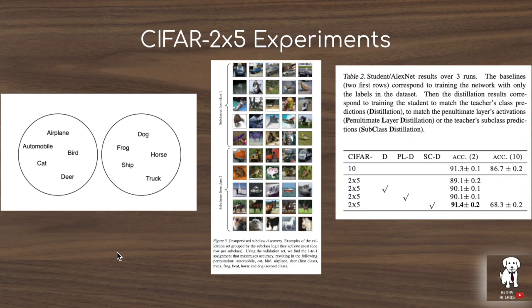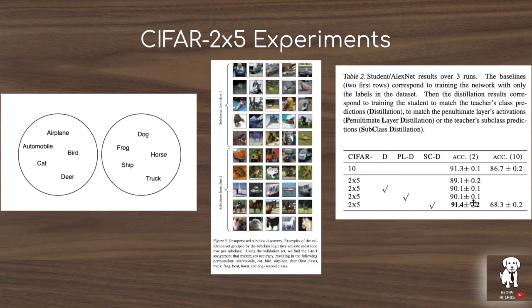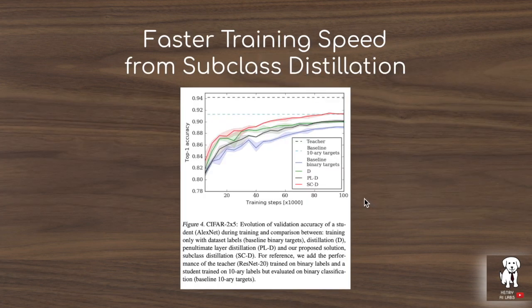The first experiment clusters CIFAR-10 into CIFAR-2x5, grouping airplane, automobile, bird, cat, and deer into one class and other CIFAR-10 classes into the other. They show how subclass distillation naturally separates these classes into subclasses — recovering cars, birds, and other subclasses from within the artificially merged classes. The results show performance achieved by teacher-student distillation on the original dataset compared to regular distillation, penultimate layer distillation, and the novel subclass distillation technique. In addition to higher performance, subclass distillation also achieves faster training speed, as shown in a top-left plot comparing training curves.